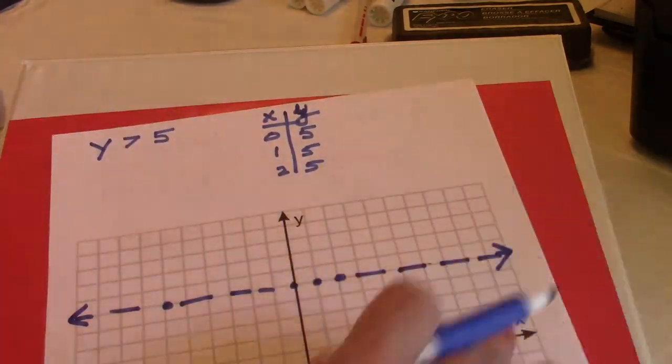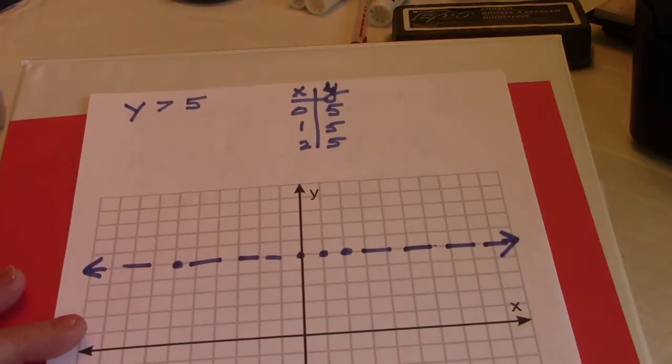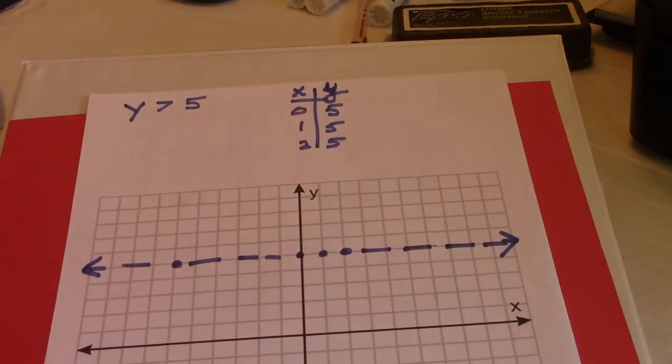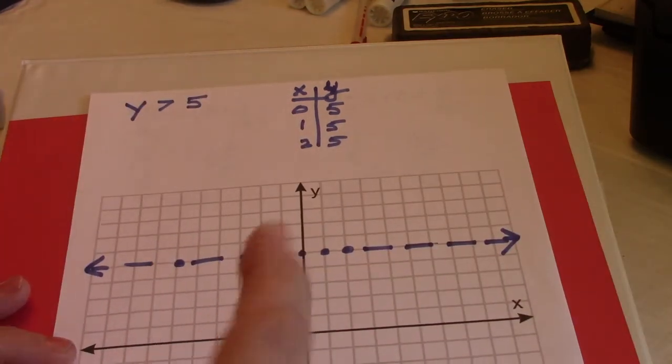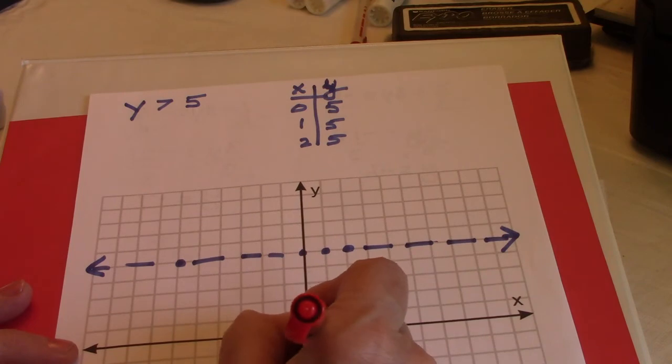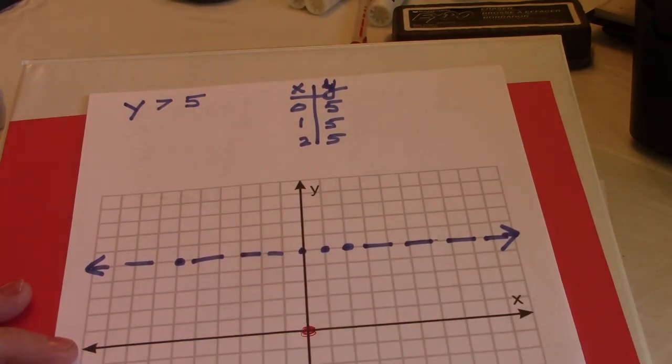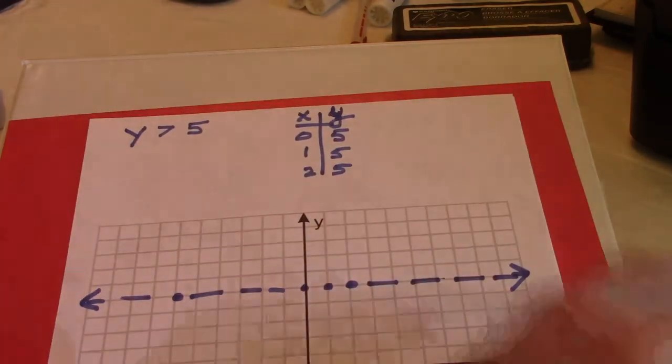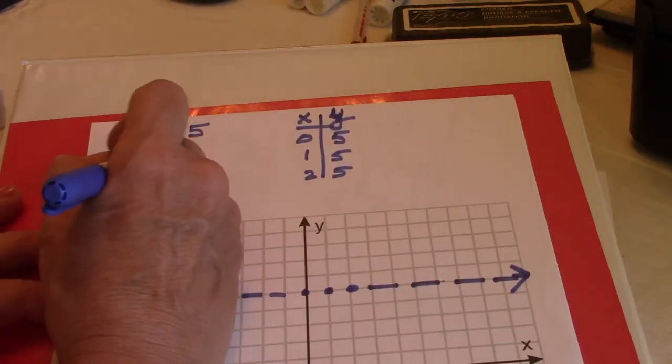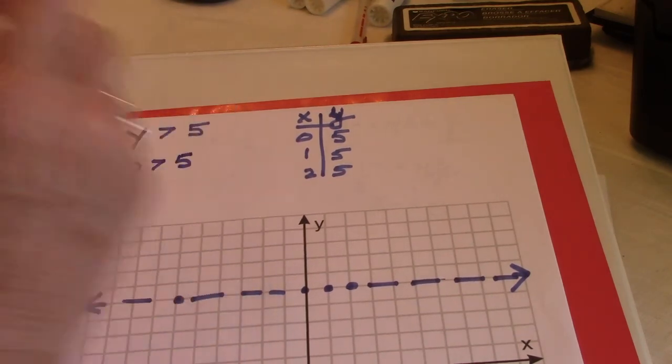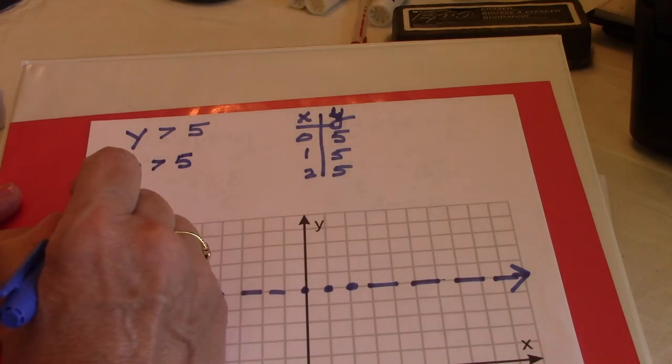Now I have to plug in either shading above or below. Above or below. So I'm going to put in my test point. 0, 0. Okay. 0, 0. I have 0 is greater than 5. Is 0 greater than 5?